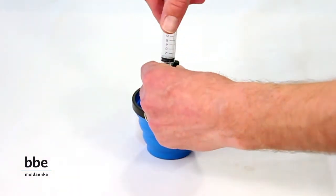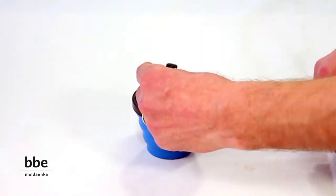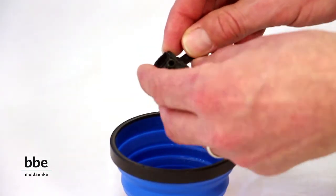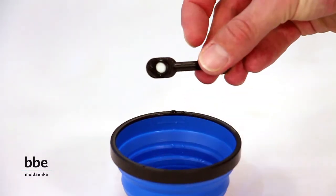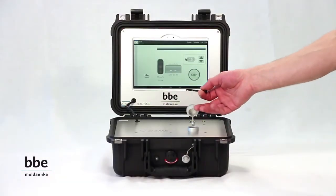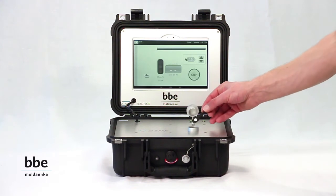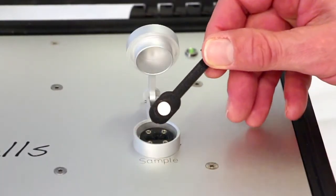After filtration, take the filter strip out of the filter unit. Here you see the TenCells device. Insert the filter strip into the filter holder of the TenCells.